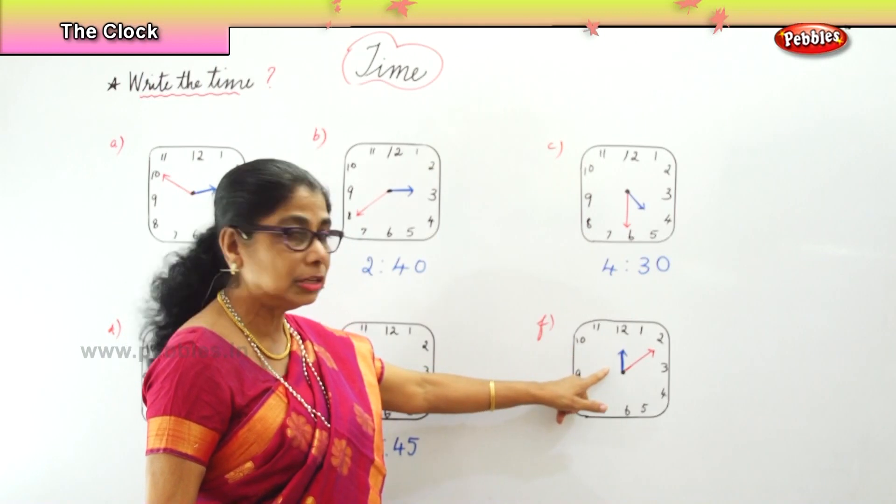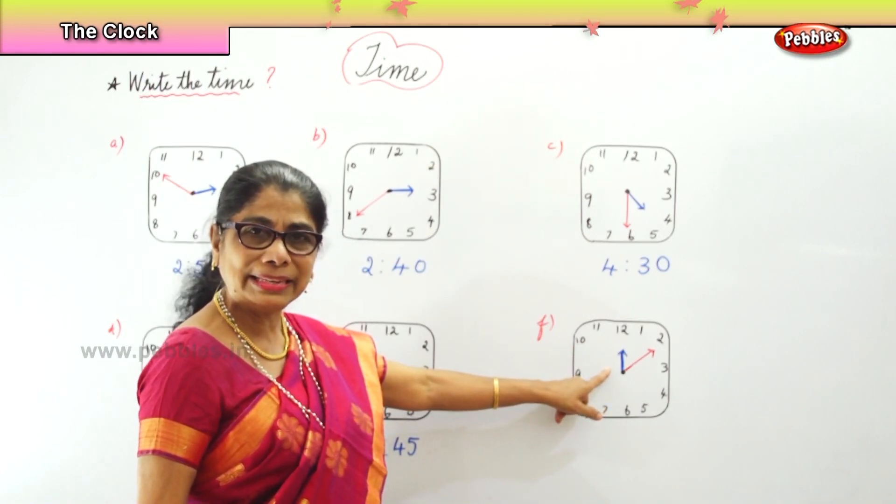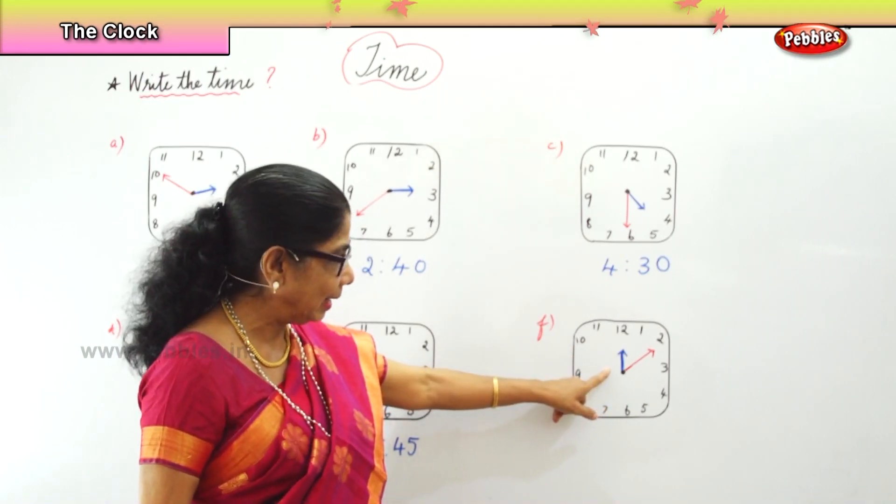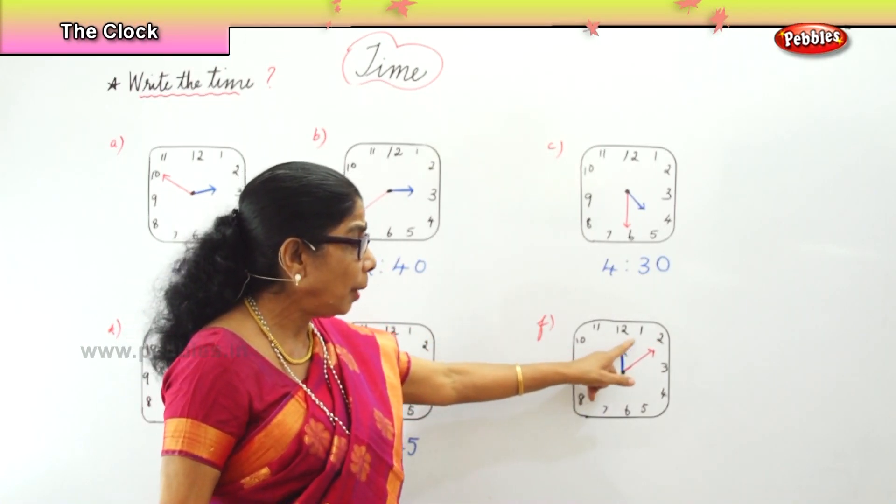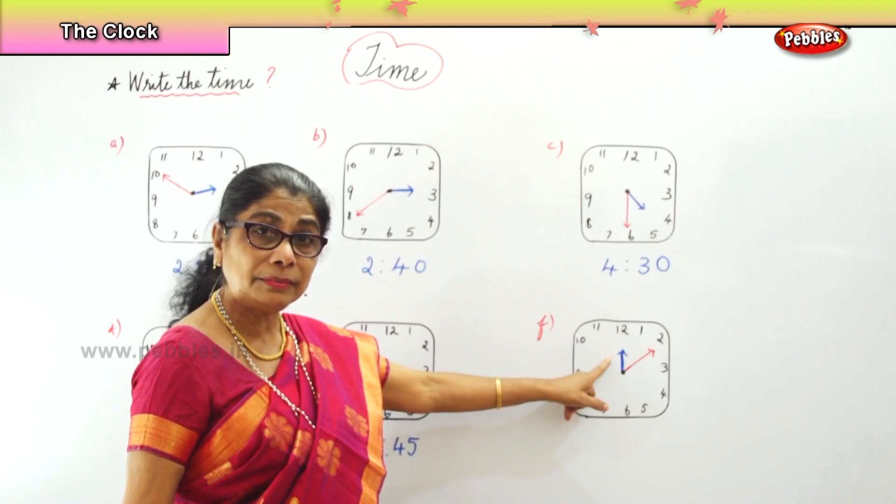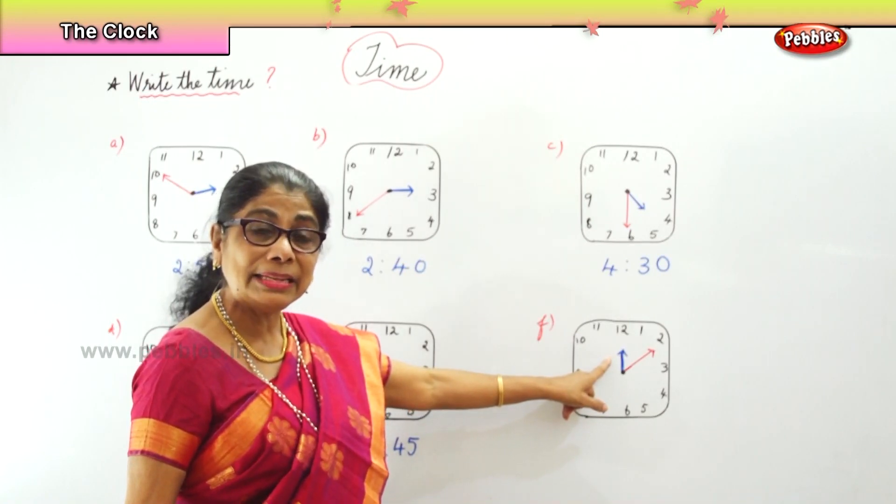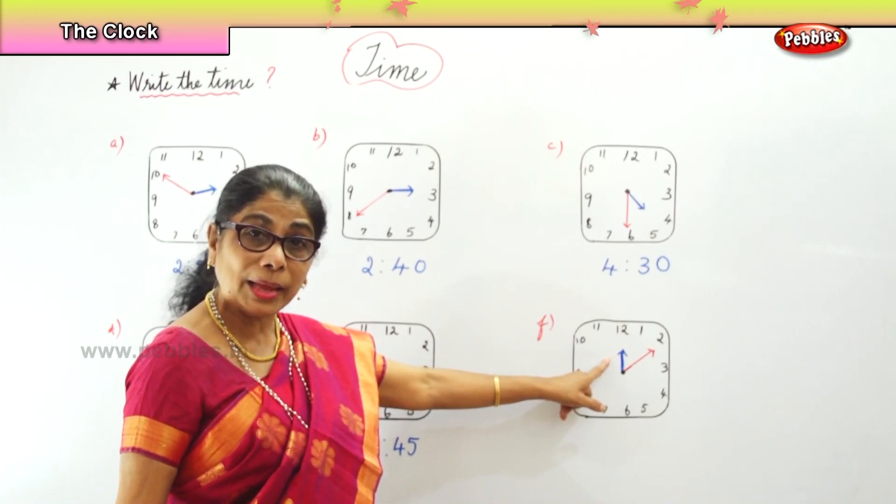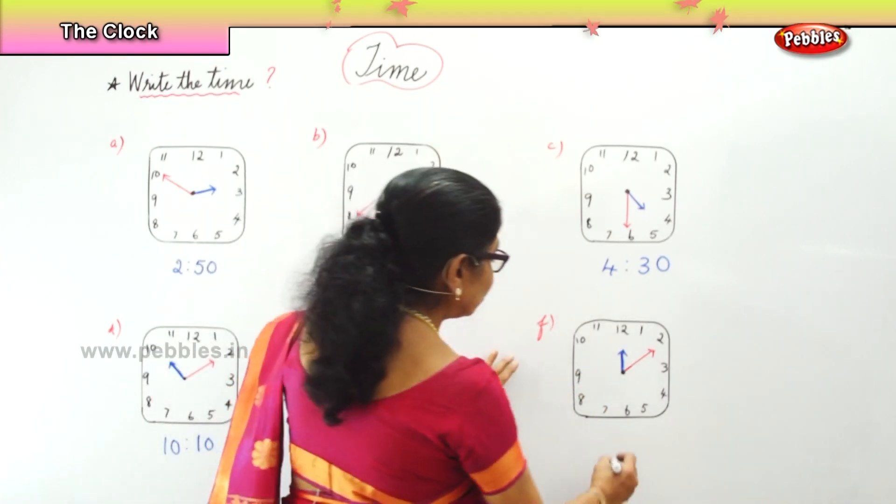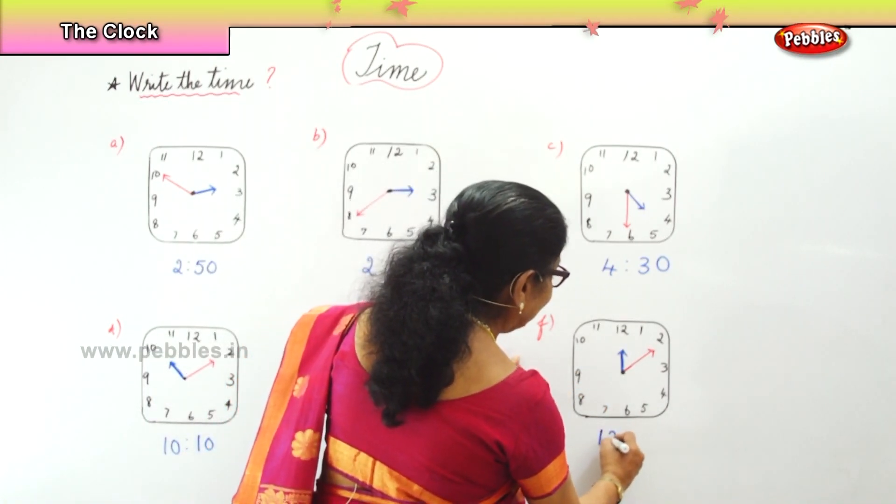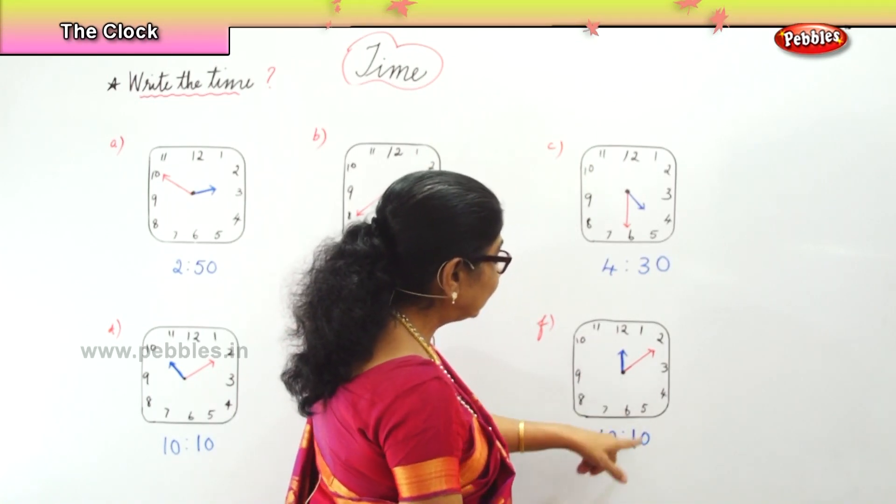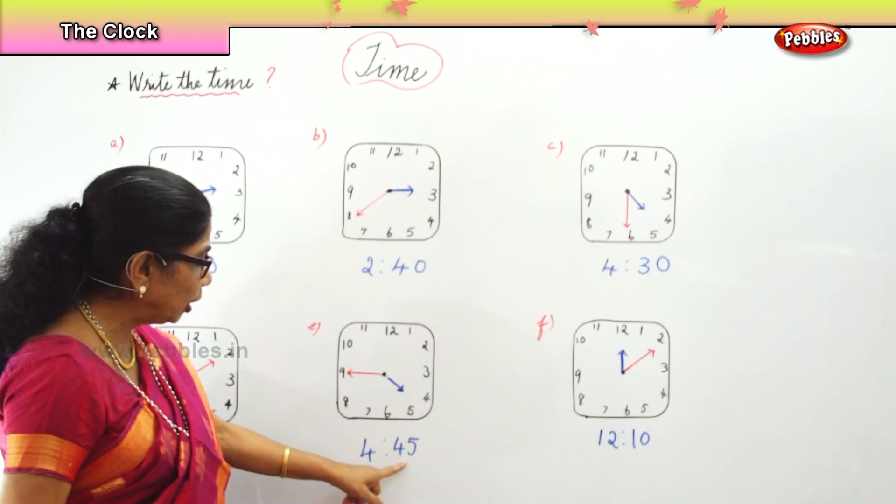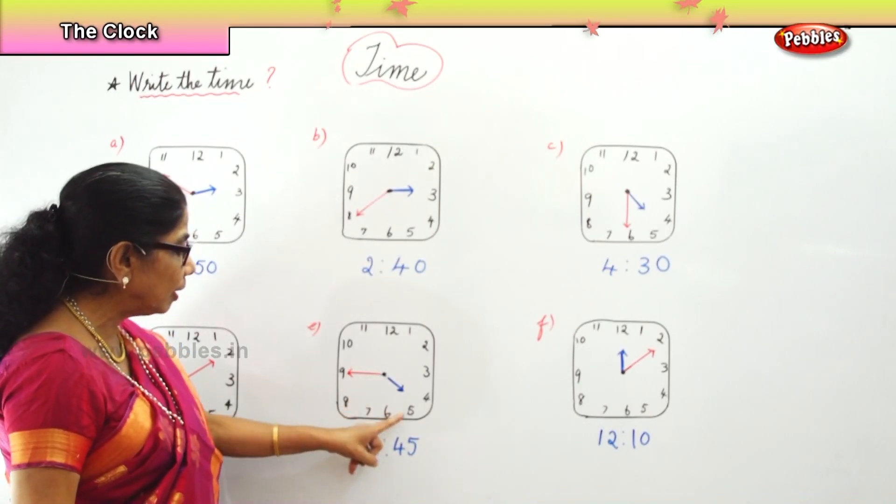And the last one, you have the hour hand on twelve, the minutes hand on two. Now that is how many minutes past twelve? Ten minutes past twelve, that is twelve ten. So twelve ten means ten minutes past twelve.